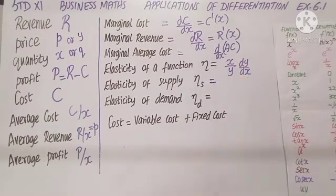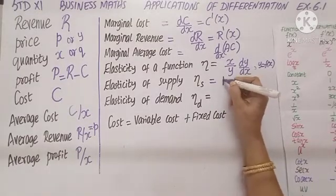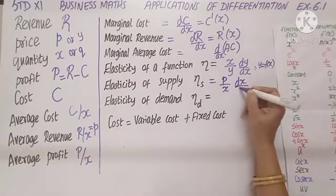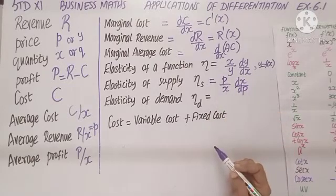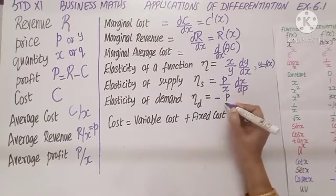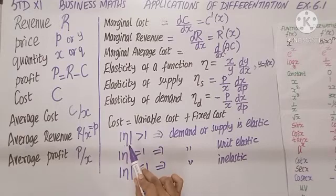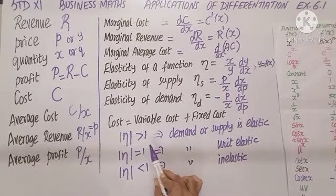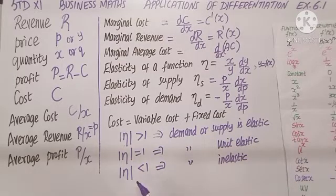When we want elasticity of supply, it is in terms of price and quantity: p by x times dx by dp. Elasticity of demand uses the same idea but it is negative: minus p by x times dx by dp. If the modulus of eta is greater than 1, we term demand or supply as elastic. If it equals 1, it is unit elastic. If mod eta is below 1, we term it inelastic.